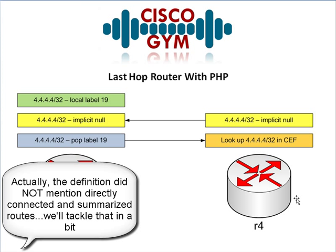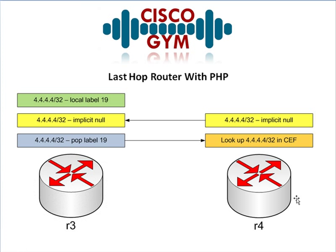What it's going to do is say: I see this prefix in my routing table, and I also see that this is a directly connected interface. So rather than assigning this a label, I'm going to give it something called an implicit null. Implicit null actually is a label — we'll get to that in a minute. It's going to advertise to its buddy R3 and say: I've got this prefix and I've assigned it an implicit null.